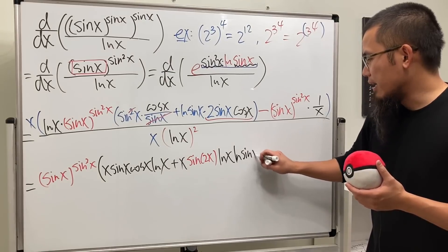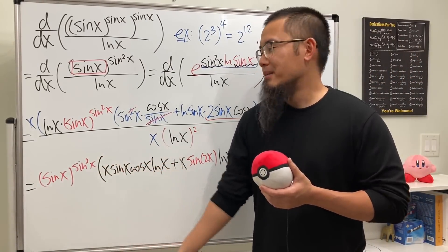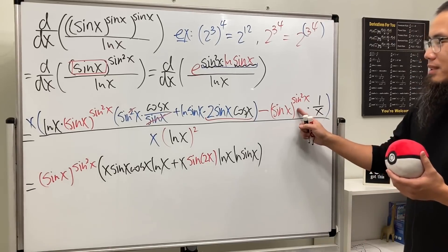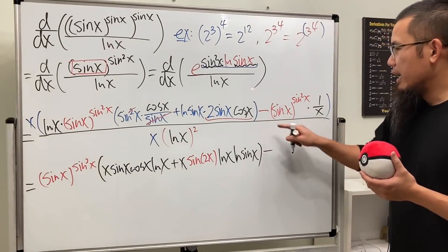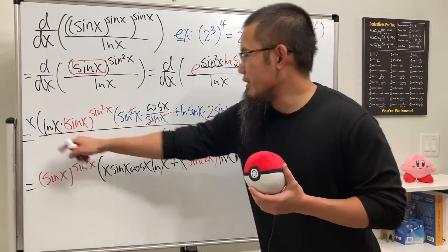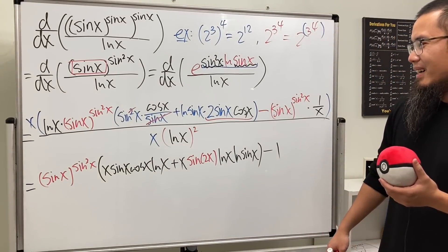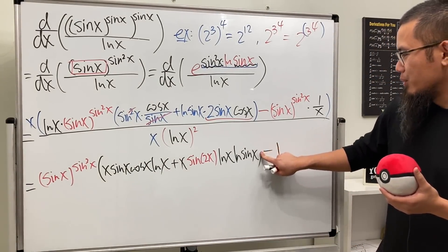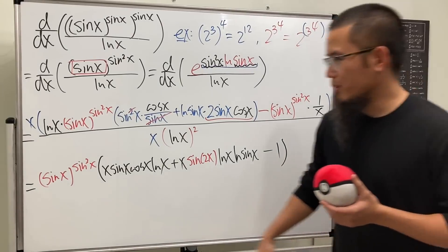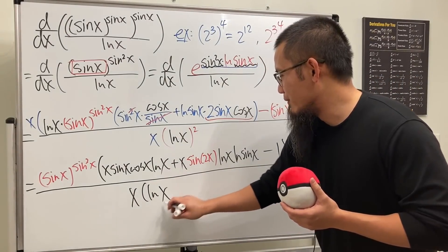So we put down sin(2x)·x·ln(x)·ln(sin(x)). Note: you could write it as ½·sin(2x) but that creates a complex fraction, so let's leave it. Then we subtract 1, because the x from numerator and denominator cancel, and the ln(x) only belongs to that blue part. All of this is on top, divided by x·[ln(x)]².